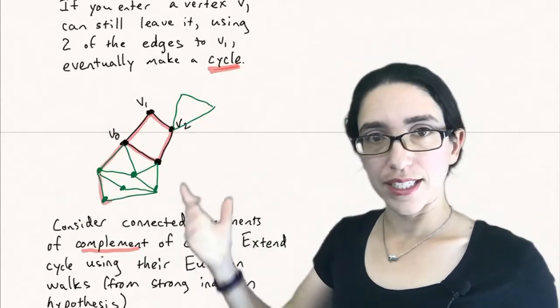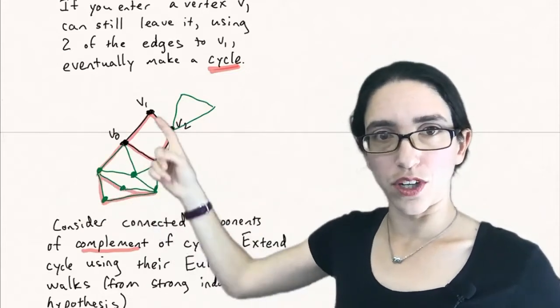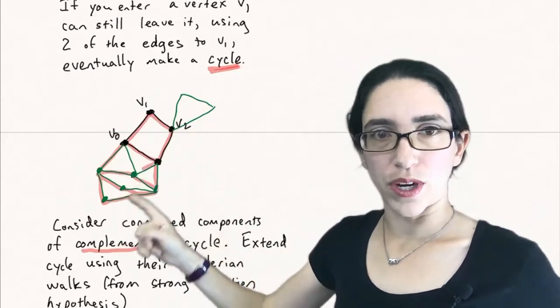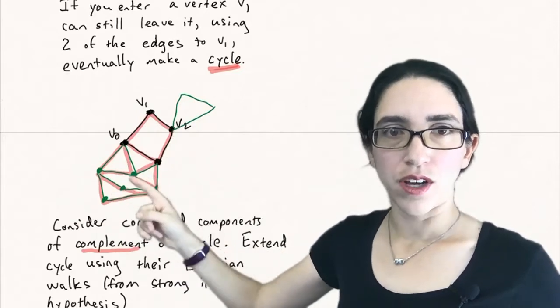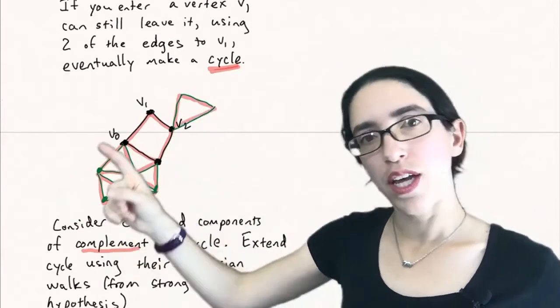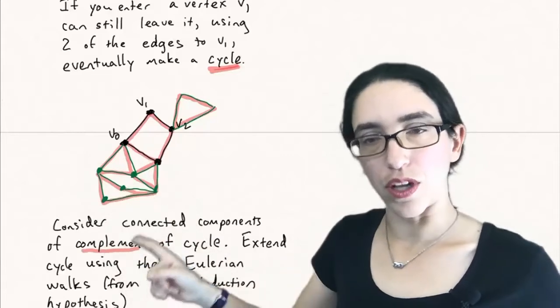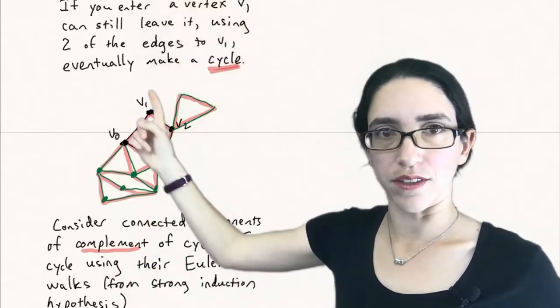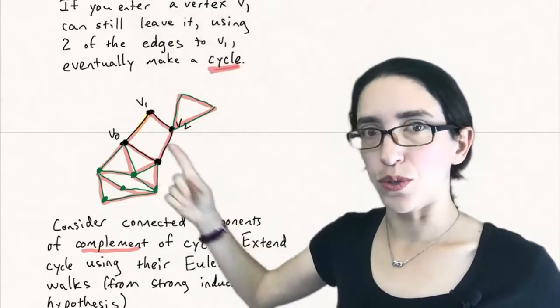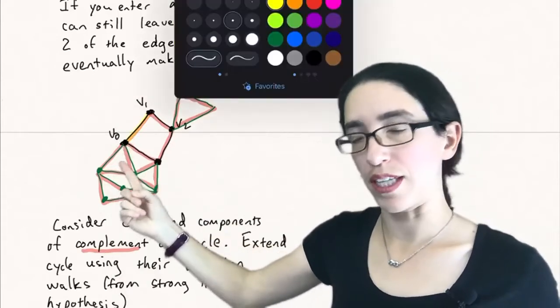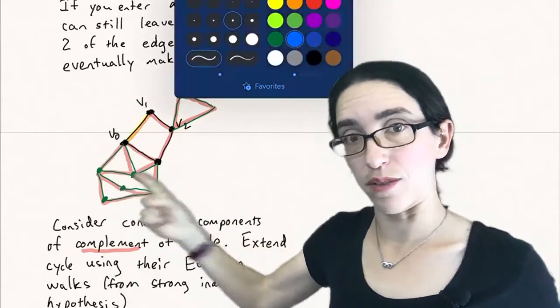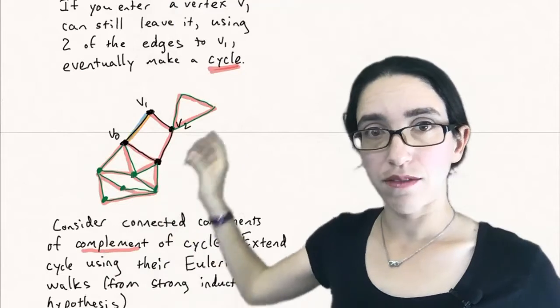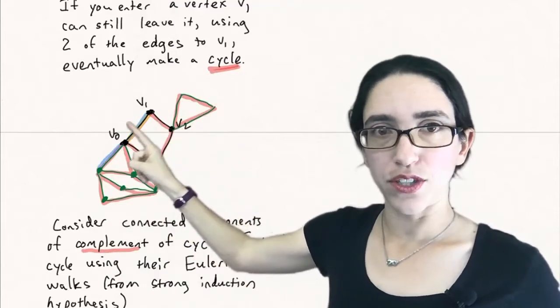Now we can extend this cycle into a longer path by using whatever Eulerian walk we have on the remaining connected components. Because these remaining connected components will also have all even degrees because we walked through each of these points of the cycle using degree two each time. So subtracting two from a degree will still leave you with an even degree.